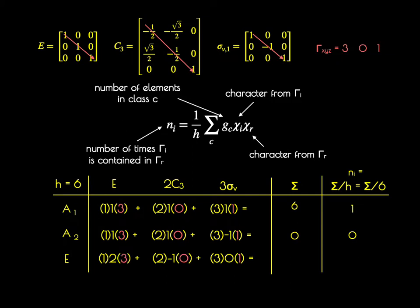Finally, for the E representation, entering those values in and carrying out the arithmetic, we get a sum of 6; 6 divided by 6 equals 1, meaning the E representation is also contained once in the reducible representation. So the reducible representation for the XYZ vectors is comprised of A1 and E. The overall dimensionality of the reducible representation equals the sum of the dimensionalities of the irreducible representations: A1 is one-dimensional and E is two-dimensional; 1 plus 2 equals 3, corresponding to the three-dimensional reducible XYZ representation.